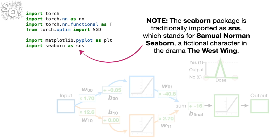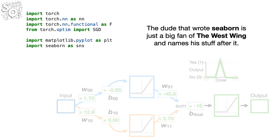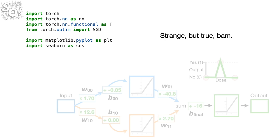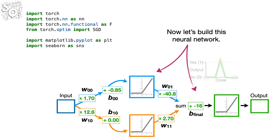Note: the Seaborn package is traditionally imported as SNS, which stands for Samuel Norman Seaborn, a fictional character in the drama The West Wing. The person who wrote Seaborn is just a big fan of The West Wing and names his stuff after it. Strange but true! Now let's build this neural network.